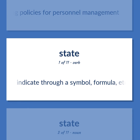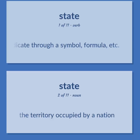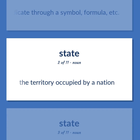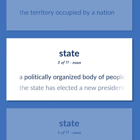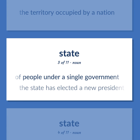State: indicate through a symbol, formula, etc. Also, the territory occupied by a nation. A politically organized body of people under a single government — the state has elected a new president.